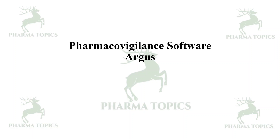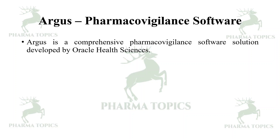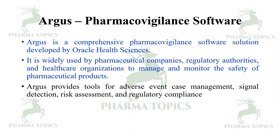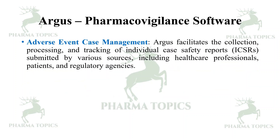Let us now look at Argus, a comprehensive pharmacovigilance software solution developed by Oracle Health Sciences. It is widely used by pharmaceutical companies, regulatory authorities, and healthcare organizations to manage and monitor the safety of pharmaceutical products. Argus provides tools for adverse event case management, signal detection, risk assessment, and regulatory compliance. It facilitates the collection and processing of individual case safety reports submitted by various sources including healthcare professionals, patients, and regulatory agencies.